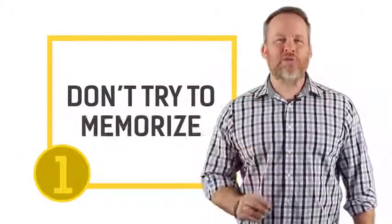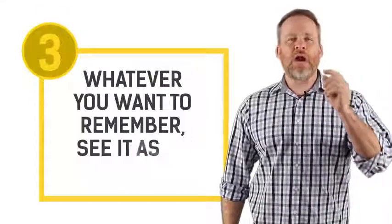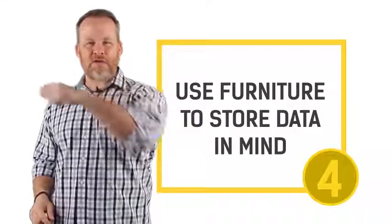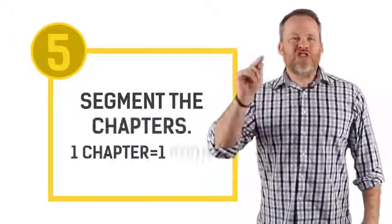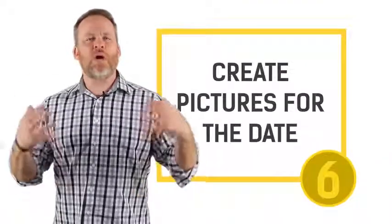In recap: number one — don't memorize as you read, highlight or underline instead. Number two — create a Mind Palace with locations in rooms to store the data. Number three — turn whatever you want to recall into an animated picture. Number four — store those pictures on furniture in your Mind Palace. Number five — segment the chapters, one chapter per room. And the optional sixth step — create pictures for dates. This method is called the Mind Palace — Sherlock Holmes used it. Click the link to get the Sherlock Holmes Mind Palace training.